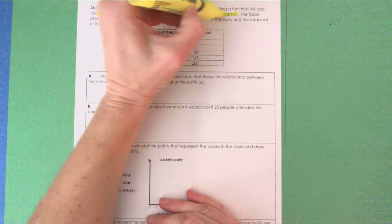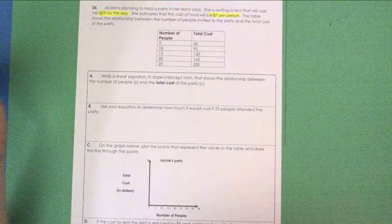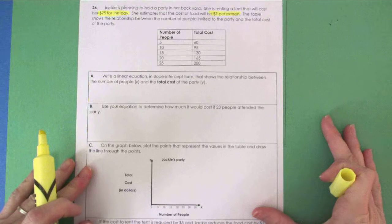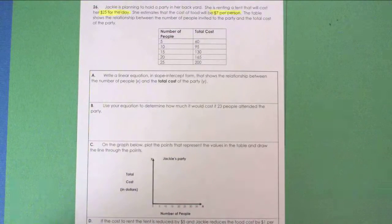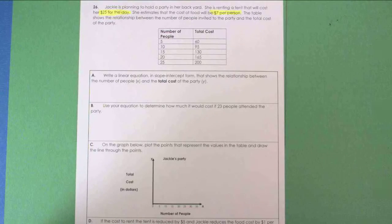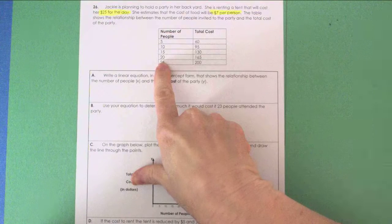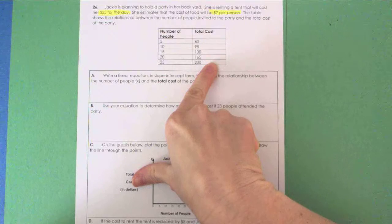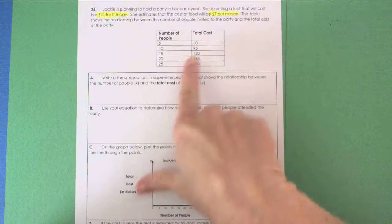That looks like a flat fee to me. Just to get that tent for the day, it's going to cost her $25 right out of pocket. Now, she estimates that the cost of food will be $7 per person. That word per makes me think this is a rate, it's a slope. The table shows the relationship between the number of people invited to the party and the total cost. We've got a nice table here.